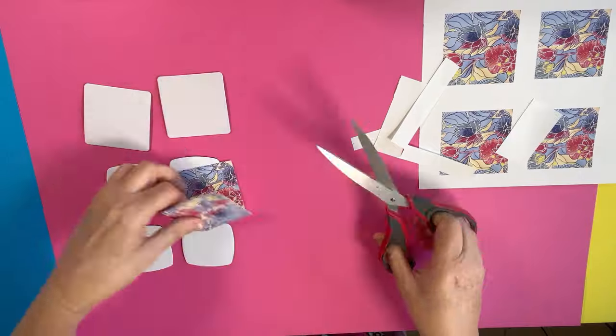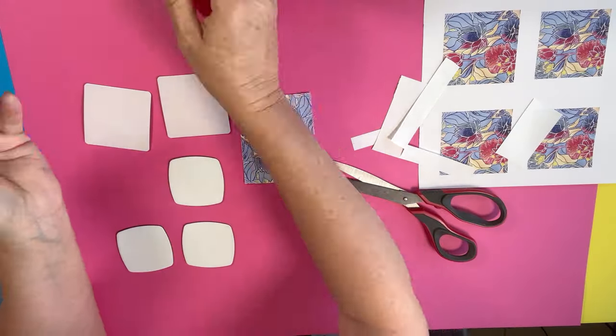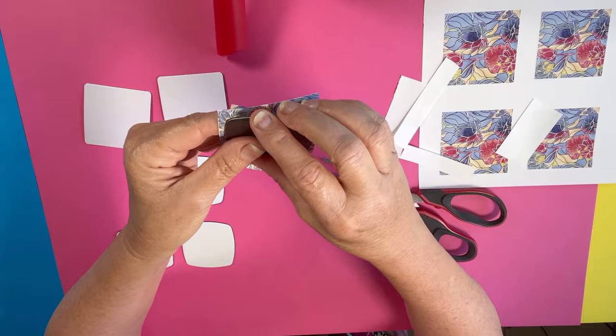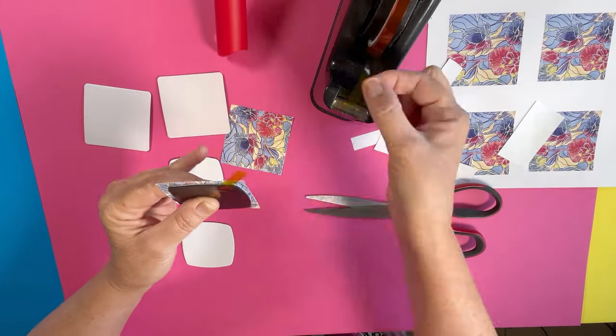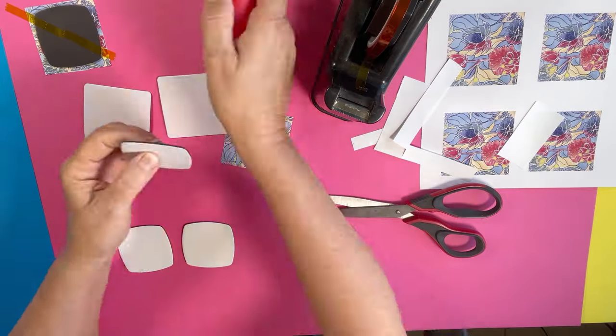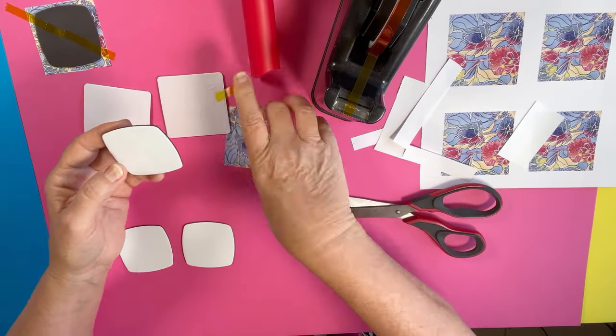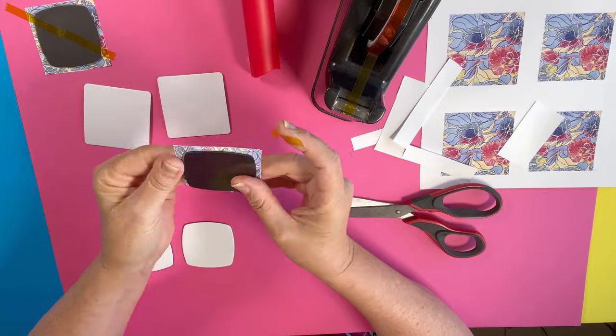So I cut them out and lint roll, and then a little bit of tape to stick them on so they're not going to move around too much. And I'll just finish the rest of these.